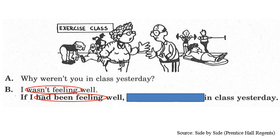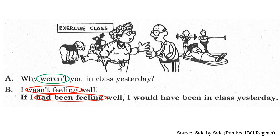The next part: the past reality is that you weren't in class. So the second half of the sentence is: I would have been in class yesterday. 'Would have been' should be used here.